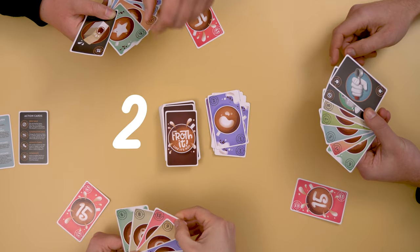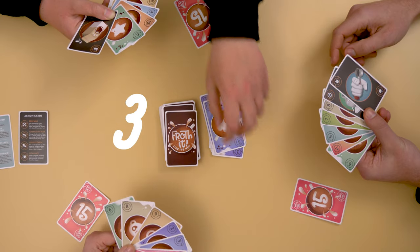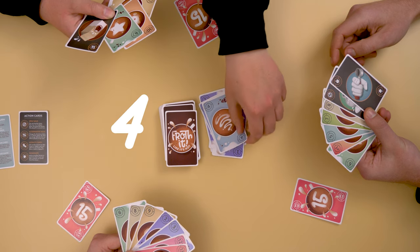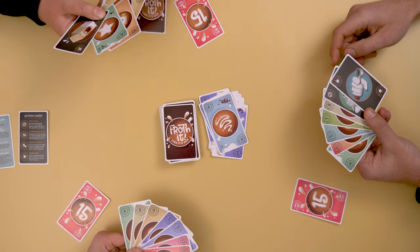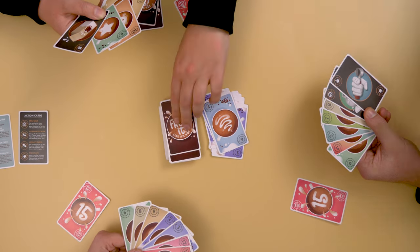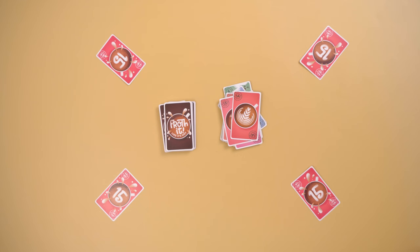To begin the round, the starting player must play their lowest latte art card first, but they may play more. You can play up to seven latte art cards on your turn. However, they must be played in runs. Each card you play must be plus or minus one to the previous card.